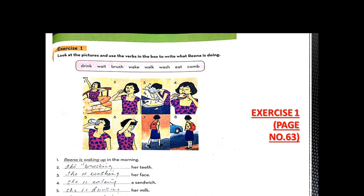Number two, in this picture, what is Rina doing? She is brushing her teeth. In number three, she is washing her face. In picture number four, she is eating a sandwich. Number five, she is drinking her milk. Number six, she is combing her hair. Number seven, she is going toward the bus stop. And the last one, she is waiting for the bus.